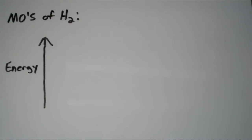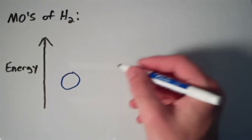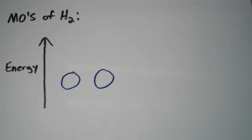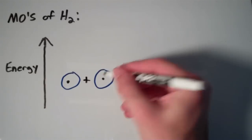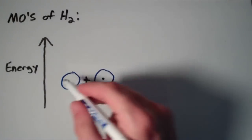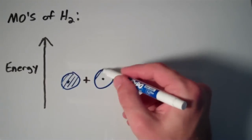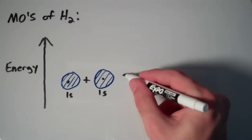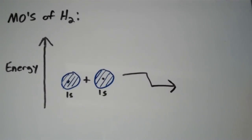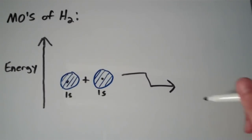So the orbitals that we're linearly combining here to form molecular orbitals are just going to be the 1s orbitals in the case of H2. The 1s orbital is shaped like a sphere. So if I have two spherical 1s orbitals — imagine that the black dots are the nuclei — I can combine these two 1s orbitals into one molecular orbital, and that molecular orbital looks like this.